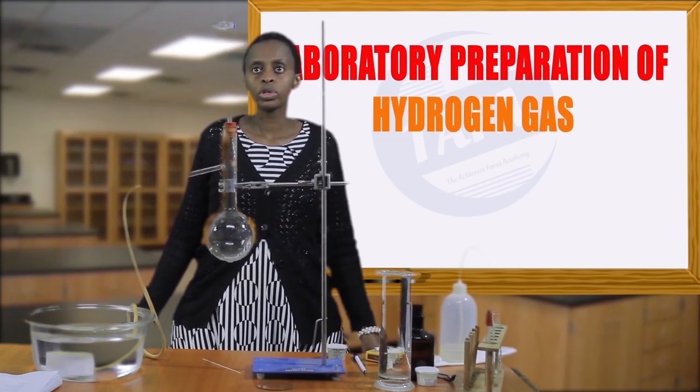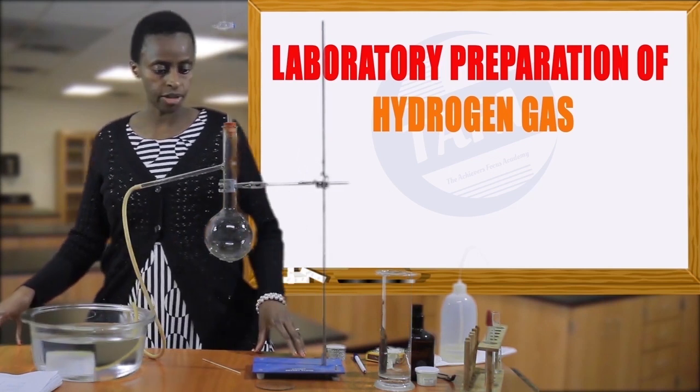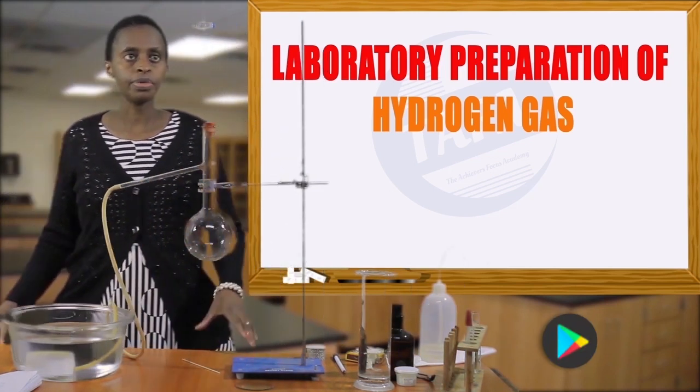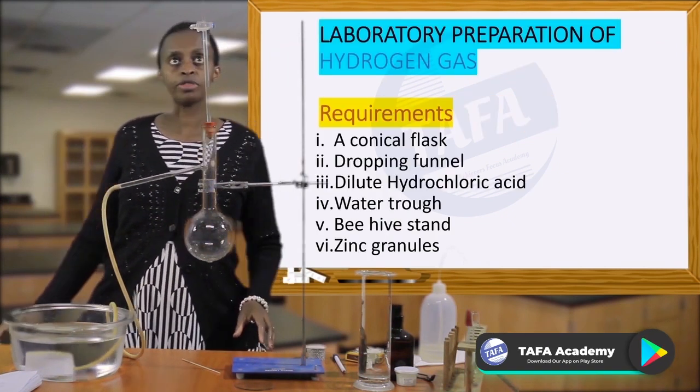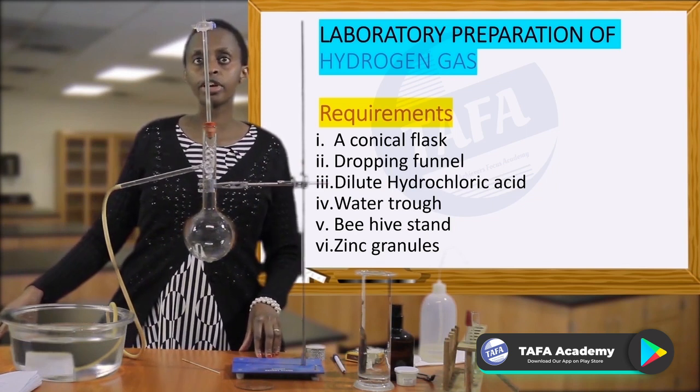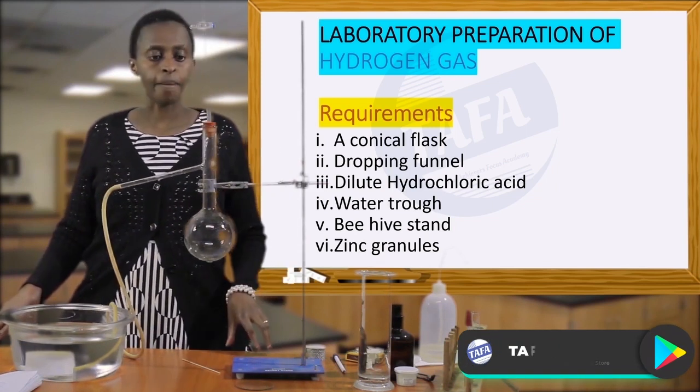Now we are going to study laboratory preparation of hydrogen gas. As you can see from my setup, you require a round bottom flask and a dropping funnel. The dropping funnel has a tap and therefore enables you to control the amounts of liquid